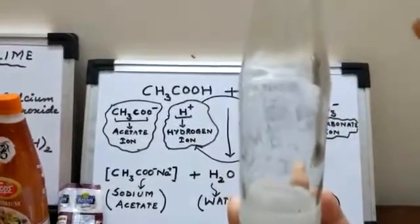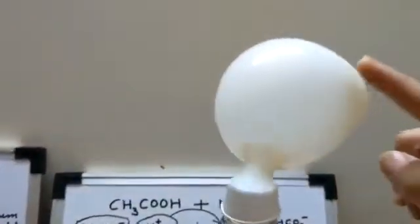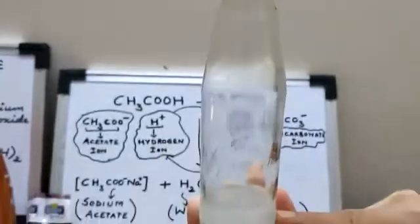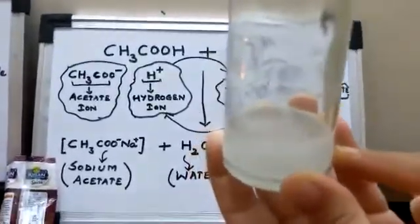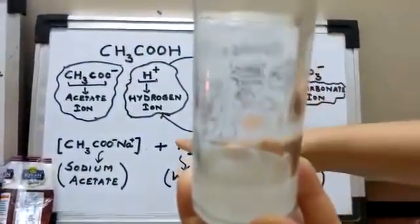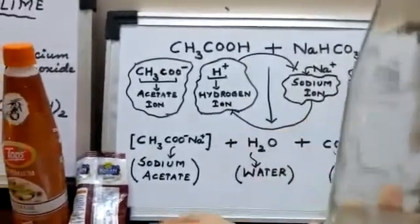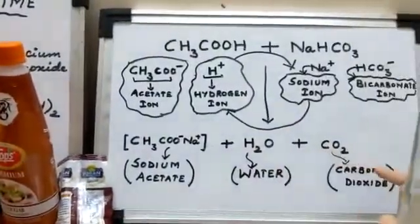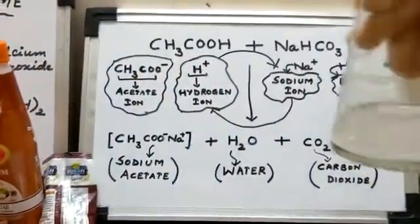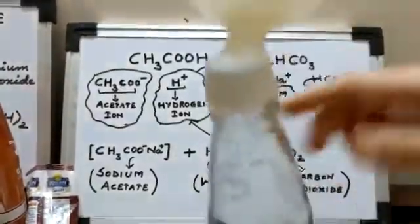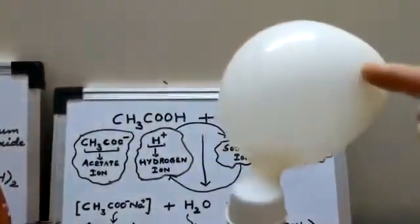What is left behind are the other two products formed in the reaction. As you can see in this equation: sodium acetate, water, and carbon dioxide. Sodium acetate and water are left in this bottle. Carbon dioxide is formed and gets collected in this balloon.